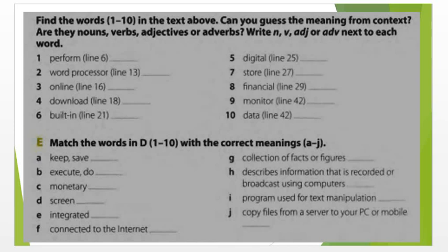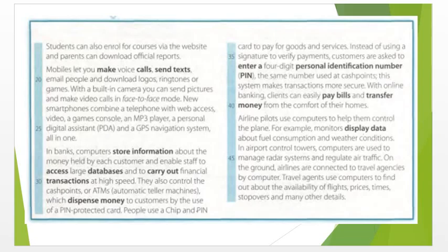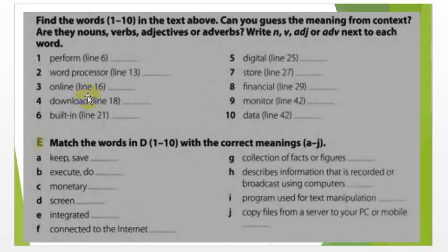In this slide, find the words 1 up to 10 in the box above. Can you guess the meaning of the words from context? Think about the meaning of each word from the context. And here we have: are they nouns, verbs, adjectives, or adverbs? Write in — for example, if it is a noun, write N; if it is a verb, write V; if it is an adjective, write Adj.